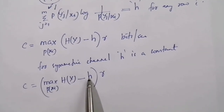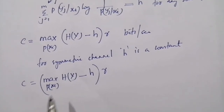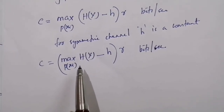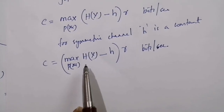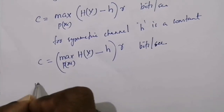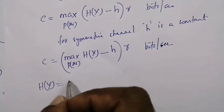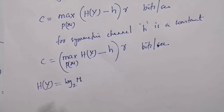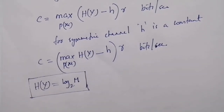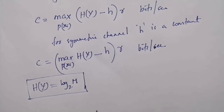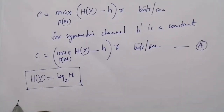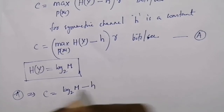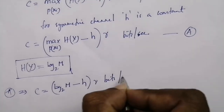Since h is a constant, maximization is done only with respect to H(Y). We know that the entropy of the output symbols is maximum when the symbols are equally likely. Since there are m output symbols, the maximum value of H(Y) is log2(m). Therefore, C equals log2(m) minus h, times r bits per second. Hence the proof.